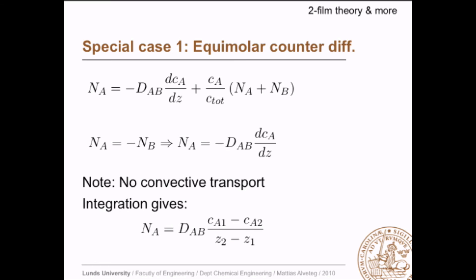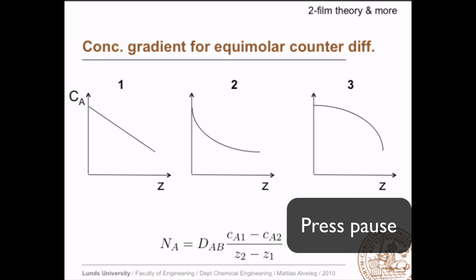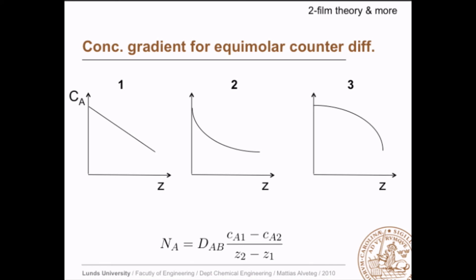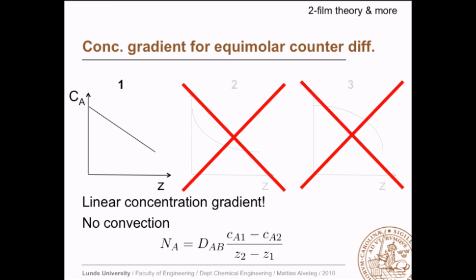What does this concentration gradient look like — is it a linear line, a curve bent in one direction, or bent in the other? Looking at the equation, it is a linear equation. Since N_A is constant at steady state, the concentration at any point in the tube is a linear function of distance. So there is a linear concentration gradient and no convection.